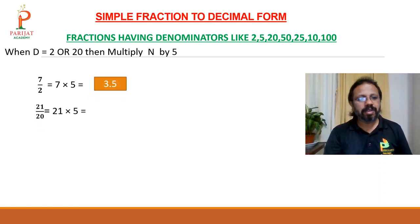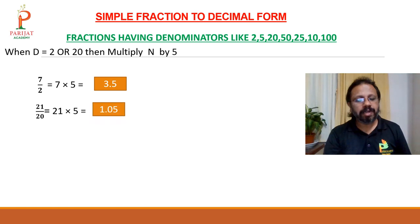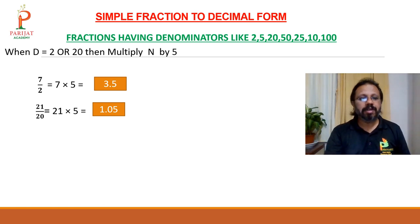Suppose 21 upon 20. Here you multiply 21 by 5, giving 105. But the denominator is 2 digits, so leave the last 2 digits and give the decimal point. The answer becomes 1.05.